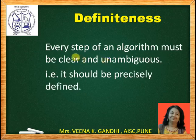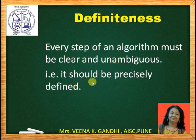Next property: definiteness. Every step of an algorithm must be clear and unambiguous. It should be precisely defined and it should be meaningful.